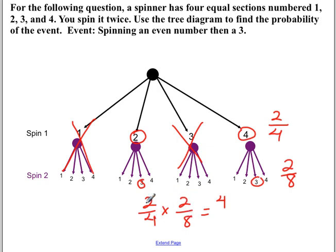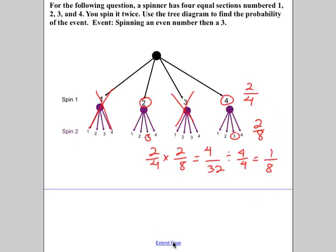You only cross multiply when you're doing a proportion, and there's an equal sign in the middle. And so the denominators are 4 times 8, which is 32. And if you reduce these both by 4 on the top and the bottom, you get 1 eighth. So 4 divided by 4 is 1, 32 divided by 4 is 8.